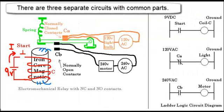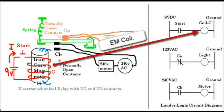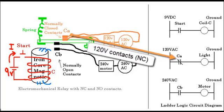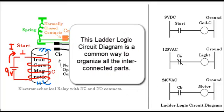There are three separate circuits with common parts: a start switch, coil, normally closed contacts, and normally open contacts. This ladder logic circuit diagram is a common way to organize all the interconnected parts.